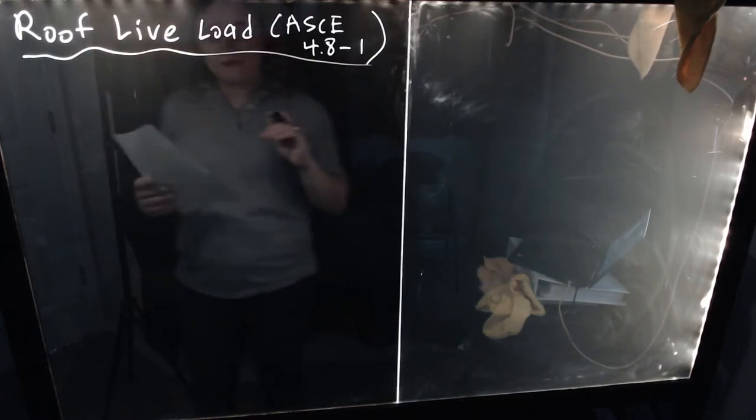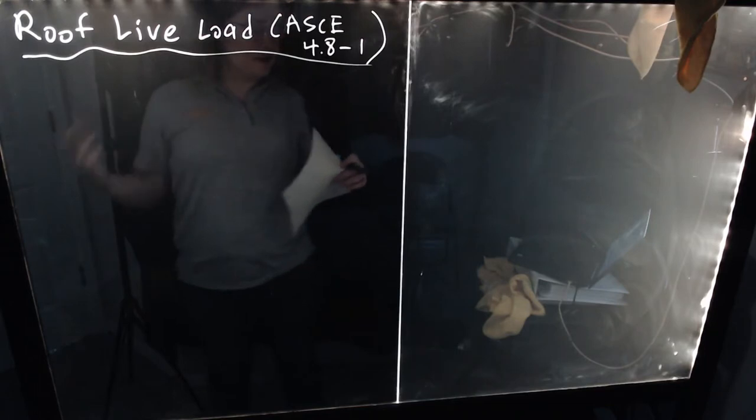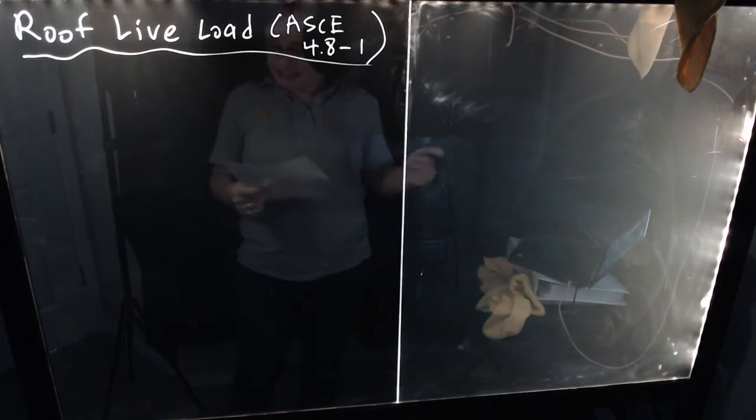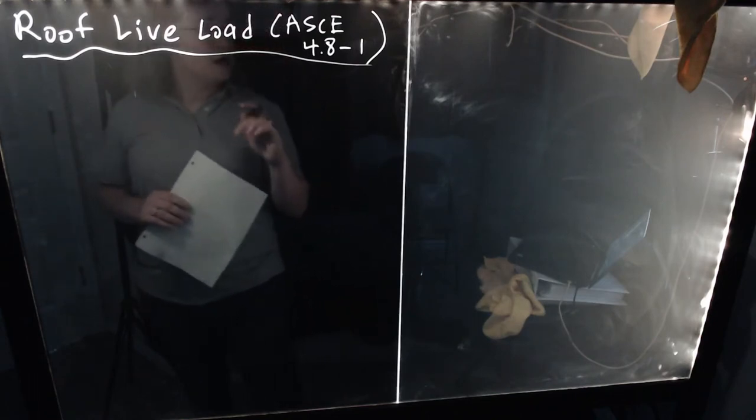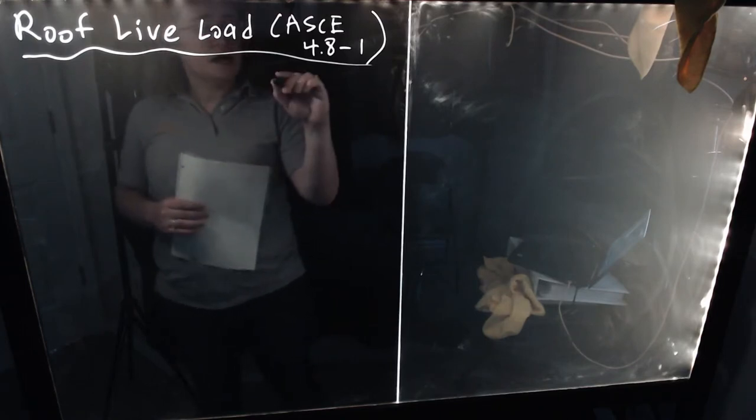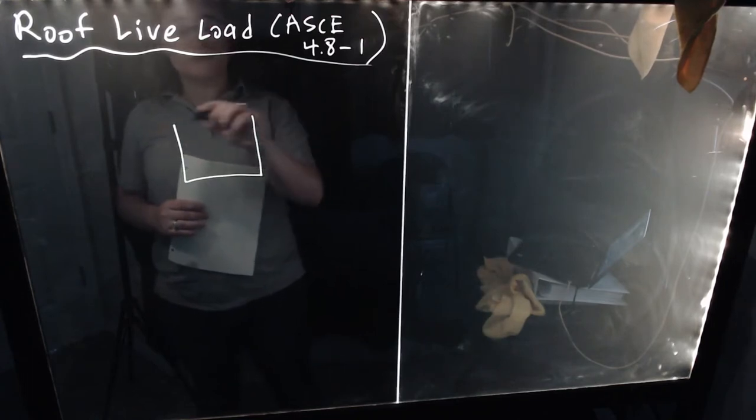So roof live load. Well, first of all, let's discuss what roof live load is. In terms of the numerical values for roof live load, you can find those just in the regular live load table in ASCE 7 chapter 4. However, roof live load does have its own special reduction procedures.